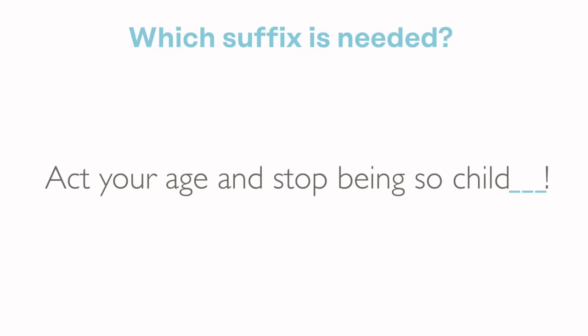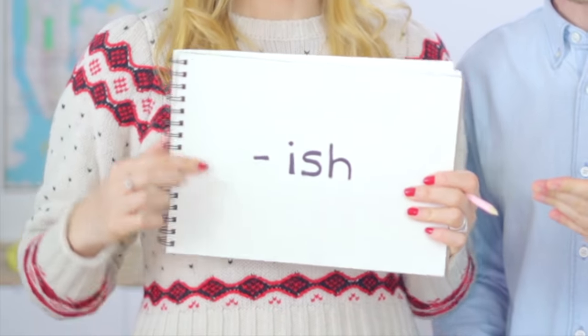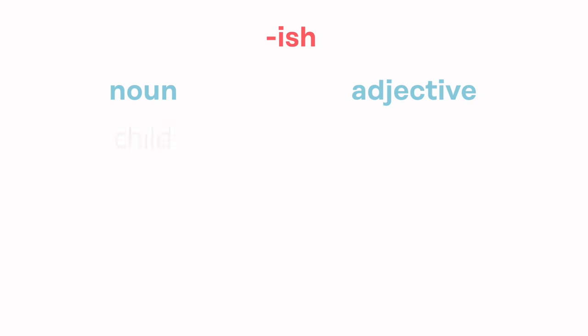What do you think, Isabel? Mmm... Here we need an adjective, right? Act your age and stop being so... Childish. El sufijo -ish en inglés se puede añadir a algunos sustantivos para crear adjetivos como niño — child — infantil — childish.